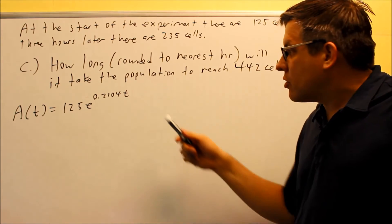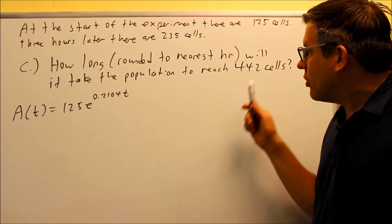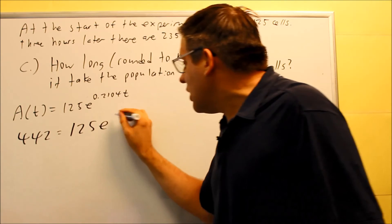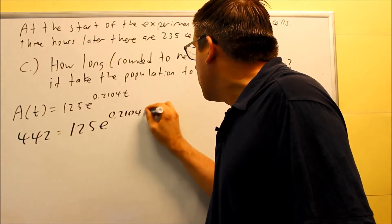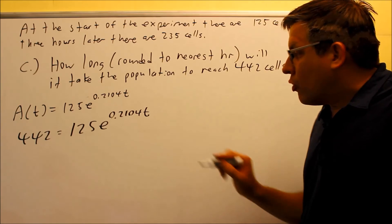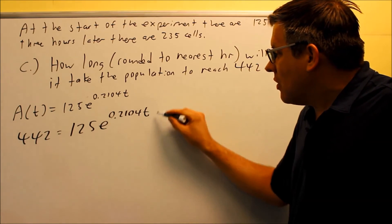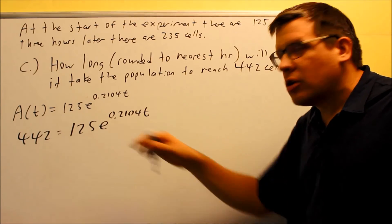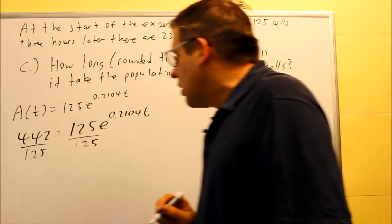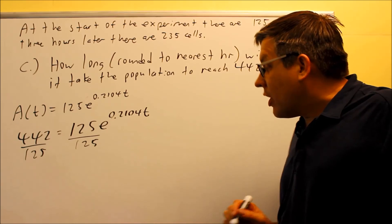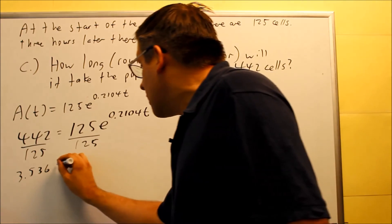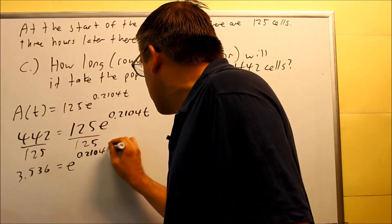So this is really the only place we can put the 442 would be after the equal sign. So 442 equals 125e to the 0.2104t. So we have it, now the equation is set equal to 442. We want to solve for the time. So to do that, we need to get this e by itself. So in order to do that, we want to divide both sides by 125. So 125 here, 125 there. When you divide that, 442 divided by 125, you're going to get 3.536. That's going to divide evenly, the decimal stops there. Equals e to the 0.2104t.